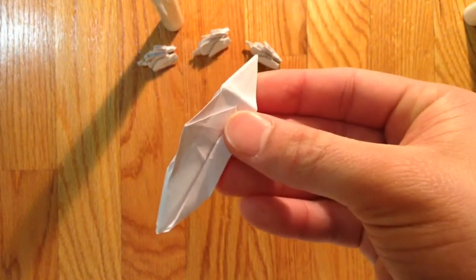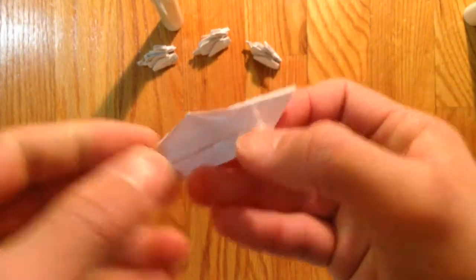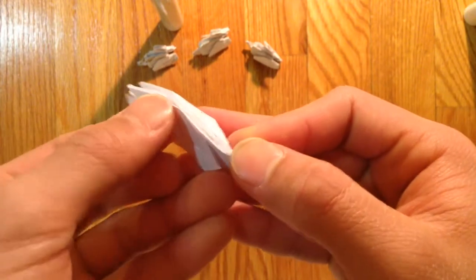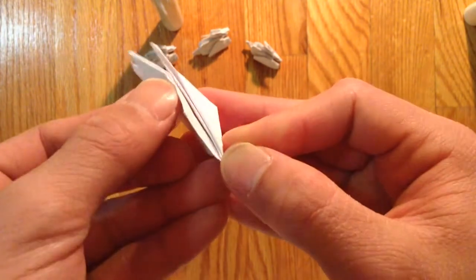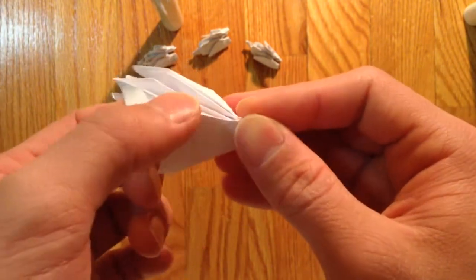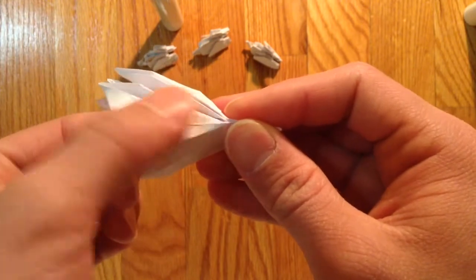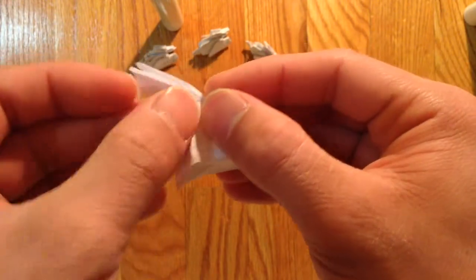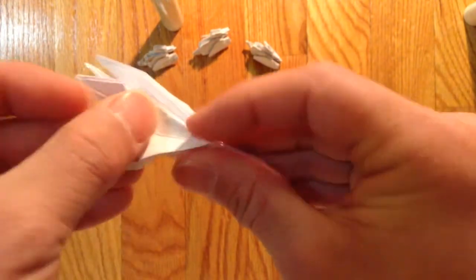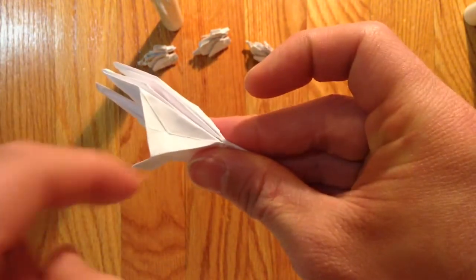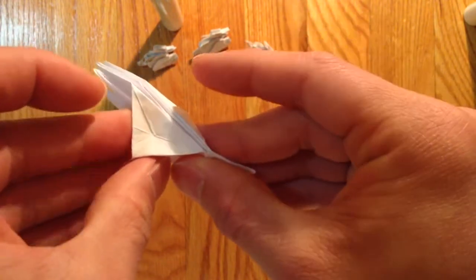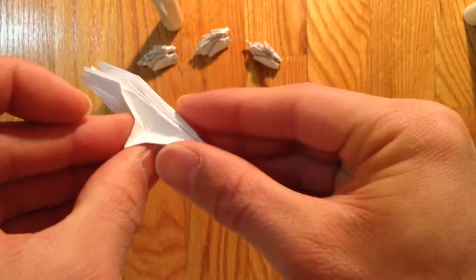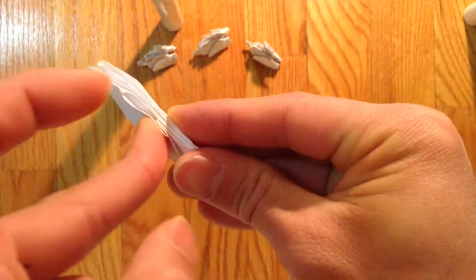Let me show here. So open this area here where that crease line is, and you're going to mountain fold all the sides like this and push in the center. Then you're going to fold it down like this.